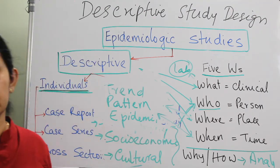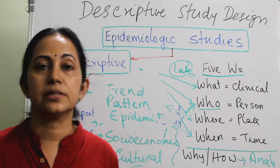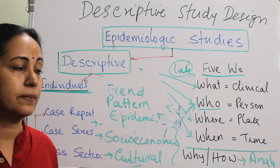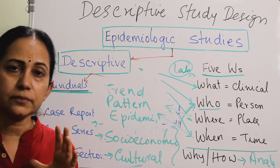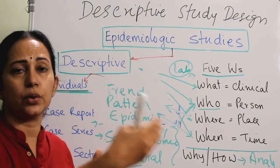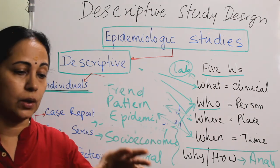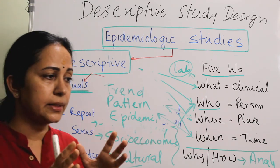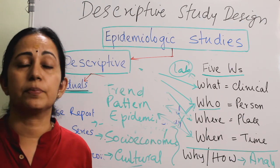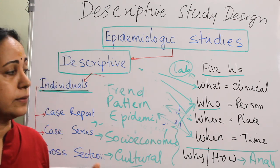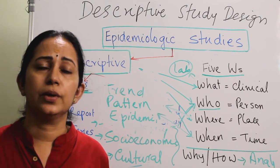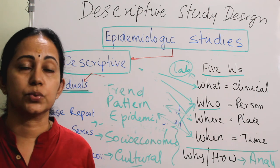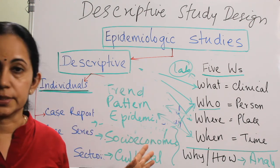To summarize: descriptive studies are divided into case report, case series, cross-sectional surveys, and ecological studies. Cross-sectional surveys look at exposure and outcome at a point in time — not backwards or forwards — and there may be multiple exposures and outcomes. They are mainly prevalence studies, useful for surveillance planning and resource allocation. Advantages include ease of conduct, less time, and less financial requirement, but the chance of bias and inability to test a hypothesis are key disadvantages.